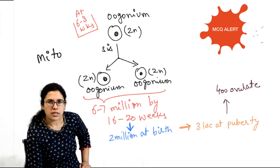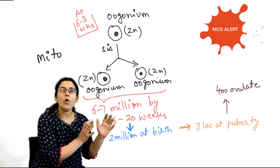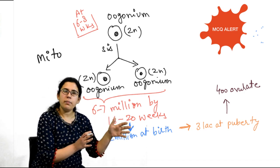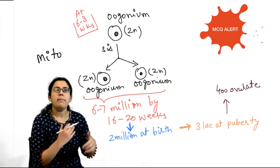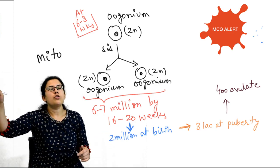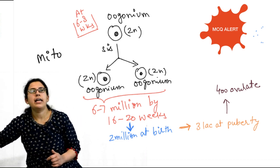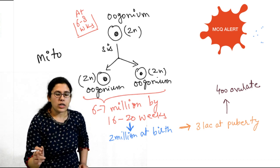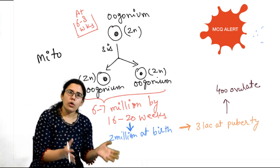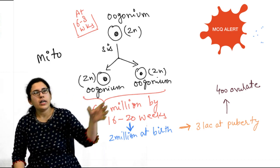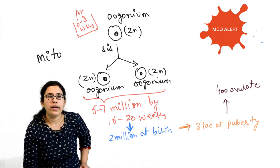Oogonium undergoes mitosis — a duplicative division. Oogonium is a diploid cell with two sets of chromosomes, one from the mother and one from the father. These diploid cells undergo mitosis, maintaining their reserve, dividing until they reach 6 to 7 million at 16 to 20 weeks of gestation. From here there is continuous decline, and the decline is directly proportional to the oogonal content — more oogonia means faster decline.